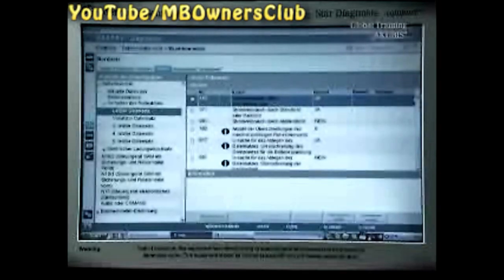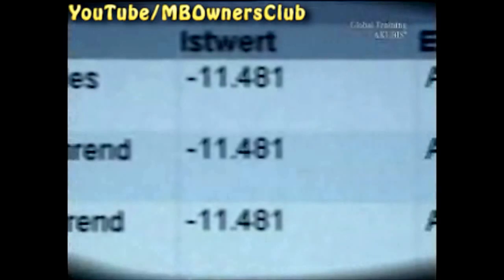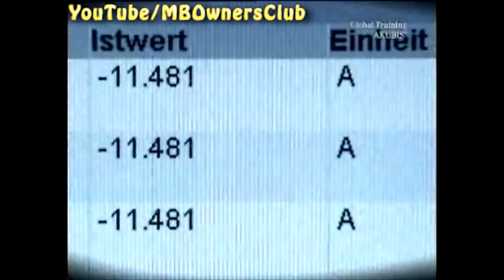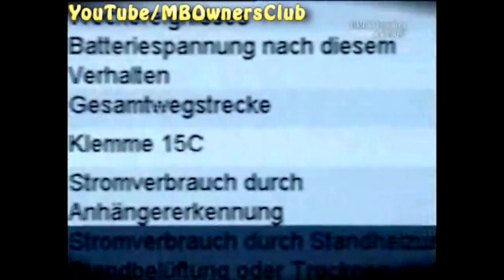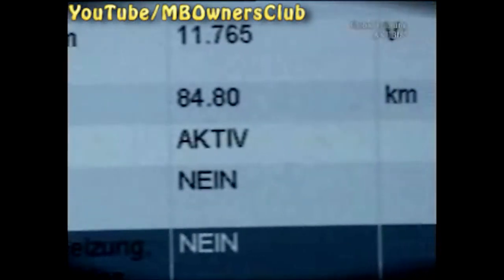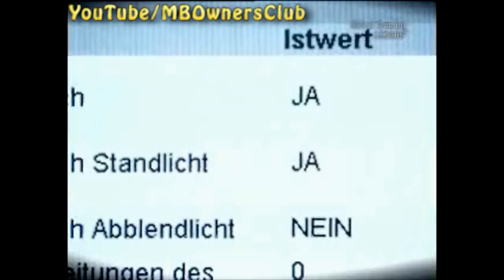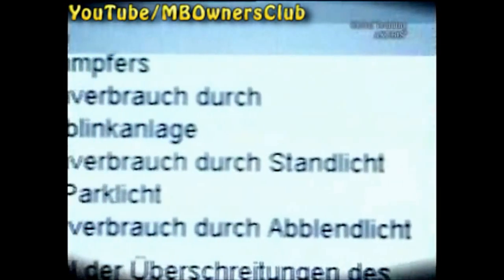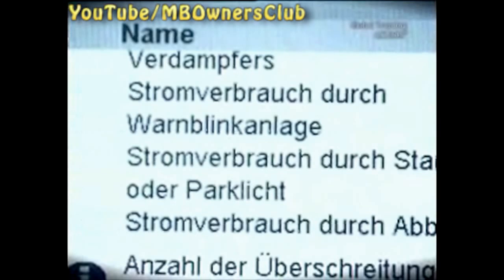Here you see at a glance: the closed circuit current was at minus 11.5 amperes and is so significantly reduced. This can have several reasons. Terminal 15C was active, meaning the key was in the electronic ignition at the time the record was saved. In addition, the hazard warning lights and the standing or parking lights were on. Therefore, it's not a system error but an operator error.